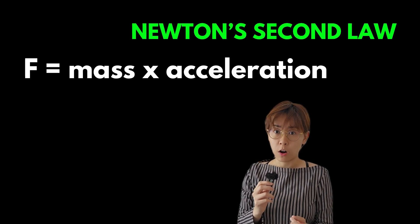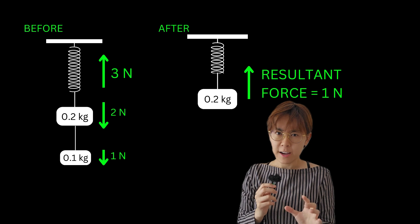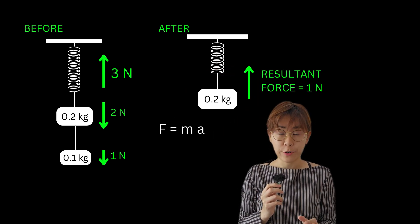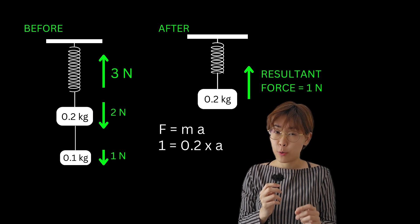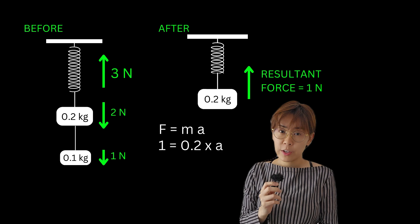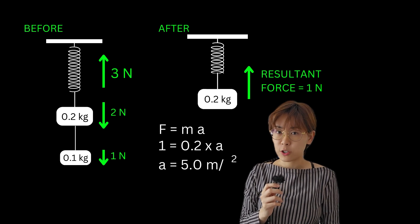Now we just need to use Newton's second law to find the acceleration, but remember to use the correct mass here. We've got a net force of 1 newton and a mass of 0.2 kilograms. Dividing 1 newton by 0.2 kilograms, we get an acceleration of 5 meters per second squared.